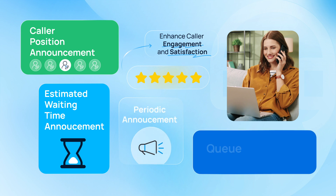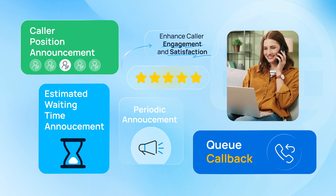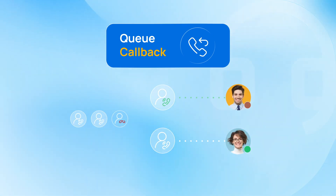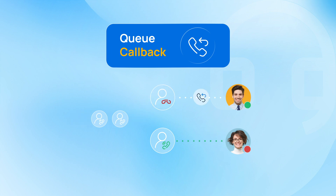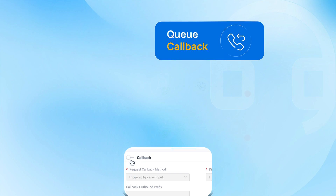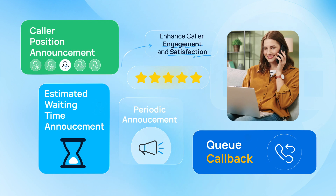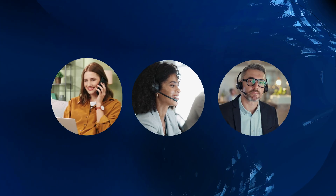For callers who prefer not to wait in the line, Yastar introduces the queue callback feature. This option allows callers to reserve a position in the queue and then disconnect the call. When their turn arrives, the system automatically assigns a free agent and initiates a callback to the caller. This feature can be activated either through a button dialed by the caller or triggered automatically after reaching the maximum waiting time, ensuring improved satisfaction rates and overall customer experience.